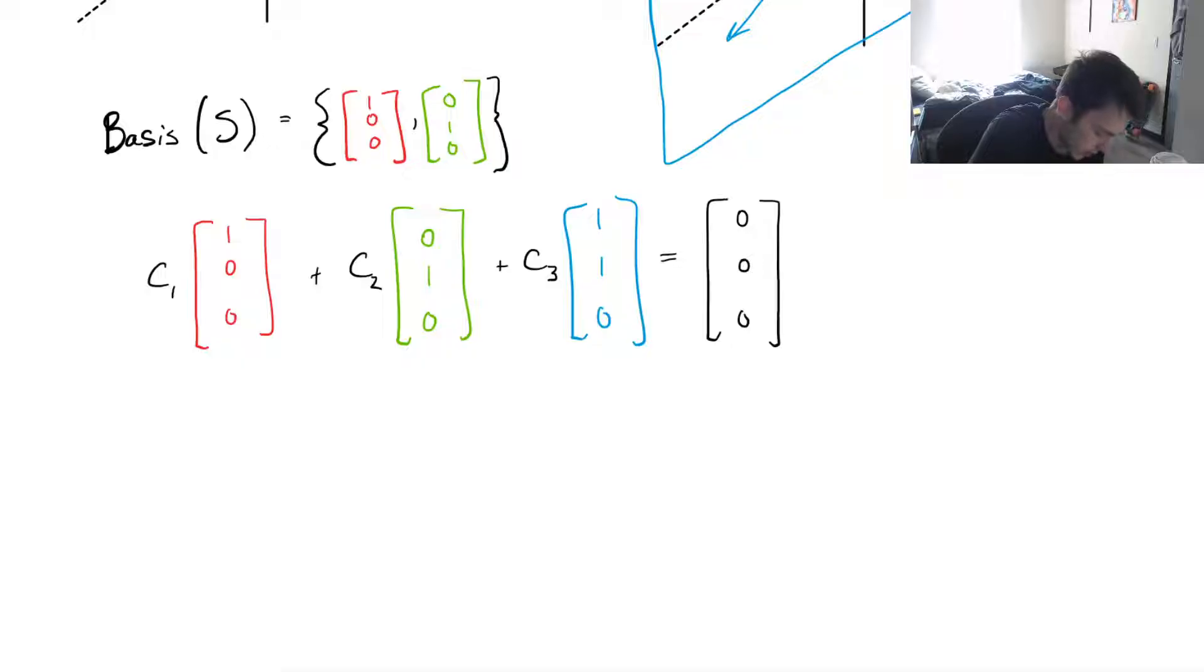If we were to put those three separate equations from the first coordinate of each of the vectors equals 0, then we could create the matrix [1,0,1; 0,1,1; 0,0,0]. And then, if you want, you can include that augmented part. But we can just say that this is a homogeneous system and simplify our matrix a little bit and write it like this.